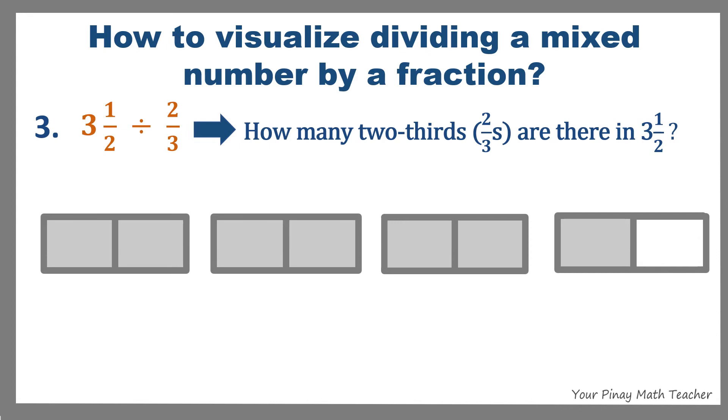And because the denominator of our divisor is 3 in 2 thirds, let us divide each hole into 3 equal parts horizontally. And let us identify each group of 2 thirds in each hole. Take note that a group of 2 thirds consists of 4 equal parts. So 4 equal parts is equivalent to 2 thirds.